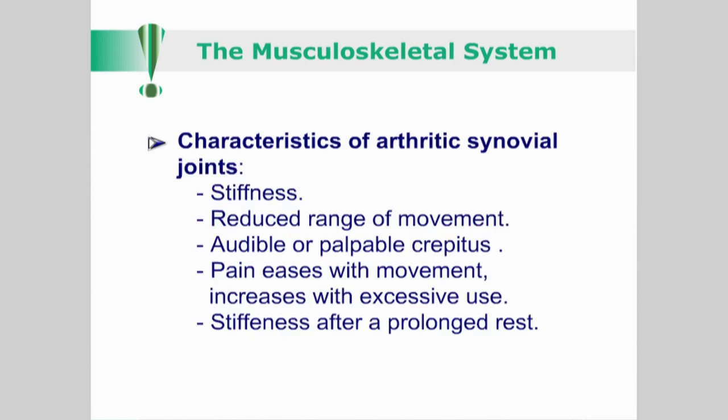An arthritic synovial joint will be stiff with reduced range of movement, and it will produce audible or palpable crepitus. The pain tends to ease with movement but increases with excessive use, and the joint generally stiffens after prolonged rest. The patient's chief complaint is usually stiffness rather than excessive pain. However, when an arthritic joint is taken to the end of its allowed range of movement, pain, usually sharp, will be reported.